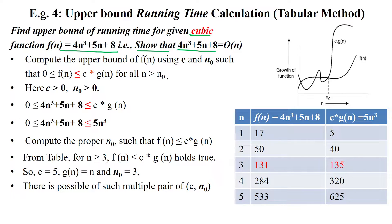In Big O of n, the given criteria to calculate the upper bound is 0 ≤ f(n) ≤ c·g(n) for all n greater than the initial input size n₀. Here, the constant c and n₀ are always greater than 0. f(n) is substituted here and we have to find out the constant times g(n).